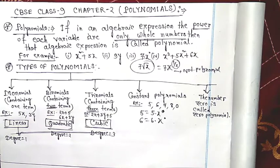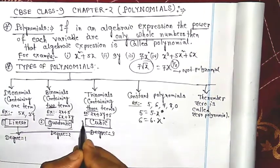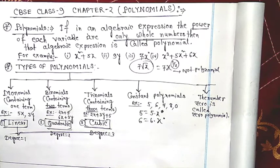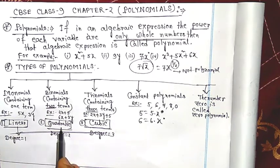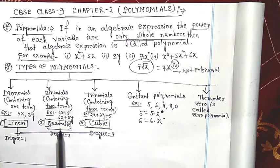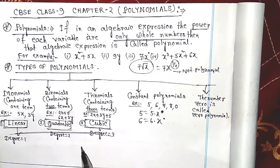There are another three types depending on the degree: linear, quadratic, and cubic. If the degree is one, the polynomial is called linear. If the degree is two, it is called quadratic. If the degree is three, it is called cubic polynomial.